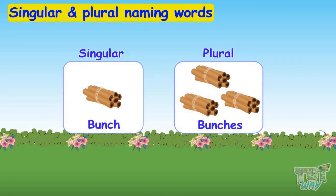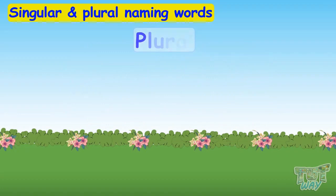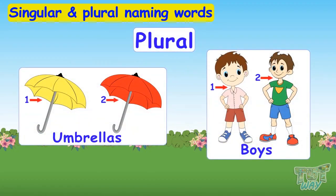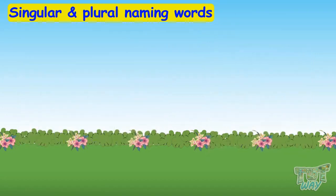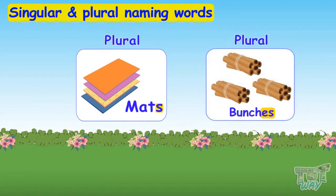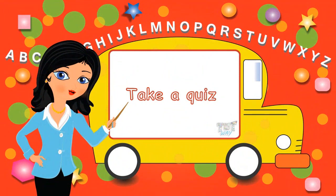So kids, today we learned singular and plural naming words. Plural naming words suggest that we are talking about more than one thing or person. We learned two ways to make plural naming words. There are many more rules of making plural naming words — we will learn more about them in our next assignment. Now you may go ahead and take a quiz to learn more.